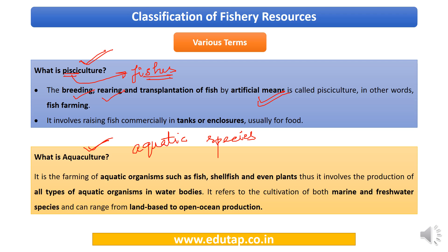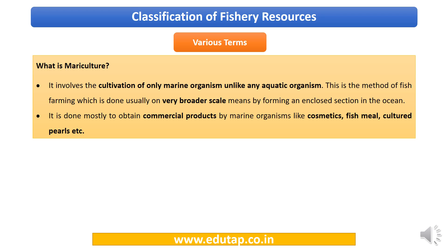From the name 'mariculture,' you can pick the clue: 'mari' refers specifically to the marine environment. When you culture aquatic species in marine conditions, that is called mariculture. These are the three key terms — pisciculture, aquaculture, and mariculture — plus ichthyology, which you need to know.